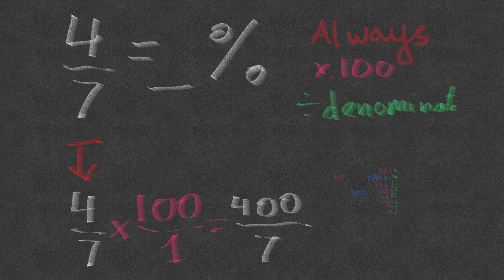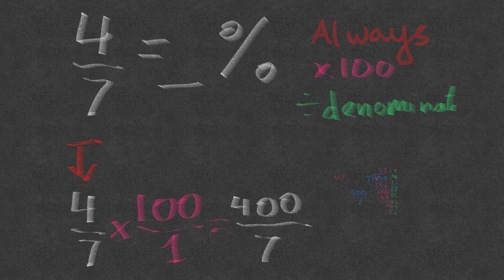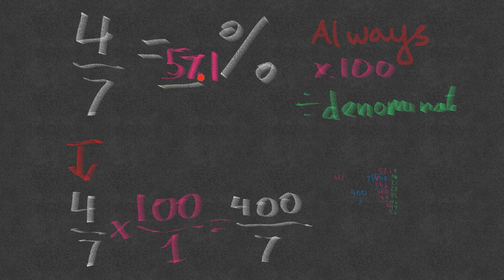As you can see, four sevenths is 57.1%. Pardon me for the handwriting, but remember the always method: multiply by 100, divide the numerator by the denominator, and work out the value to one decimal place. To find the percentage value of any fraction, multiply by 100 and divide by the denominator. Good luck on your quiz!